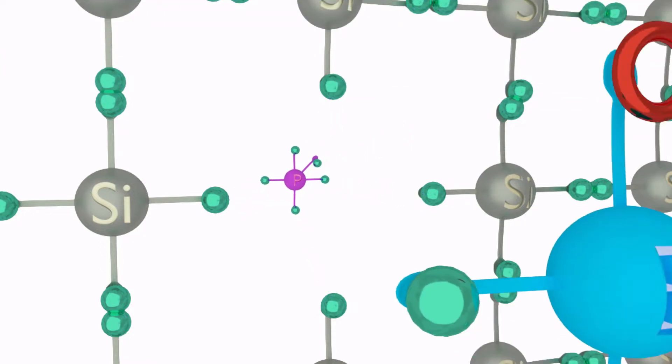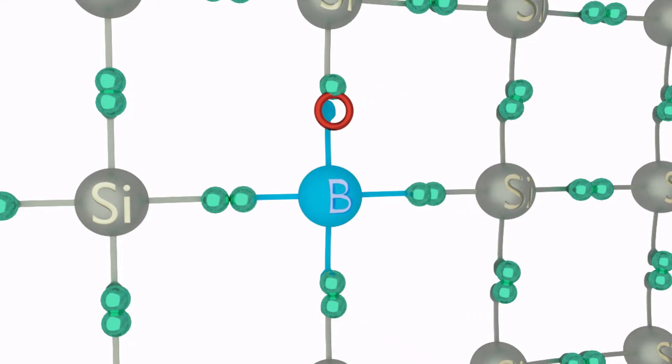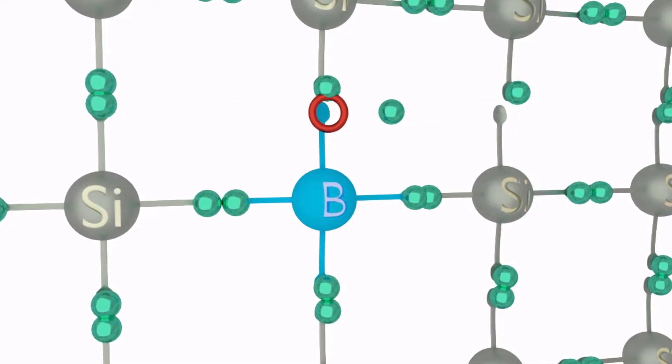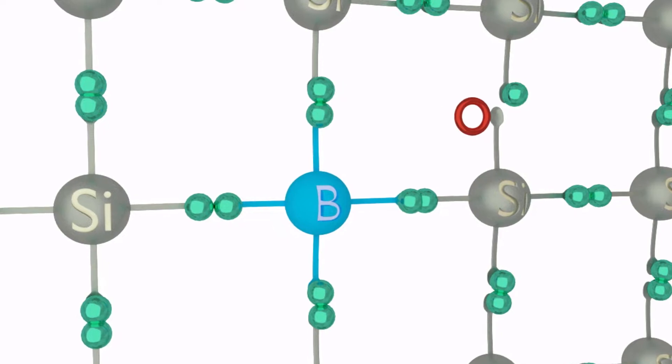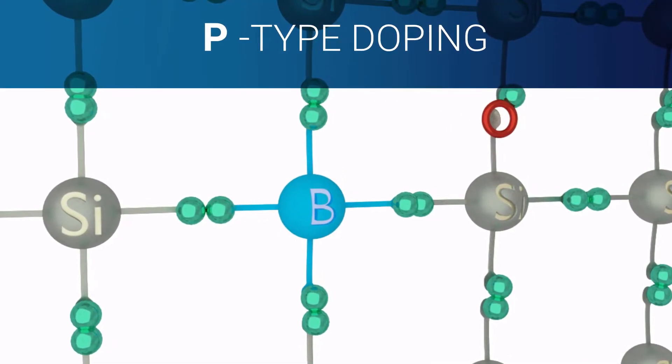On the other hand, if a boron atom is inserted into the silicon lattice that has only three valence electrons in its shell, a free space will be created for an electron. This space is known as a hole, and neighboring electrons can fill these spaces freely. This is known as P-type doping.